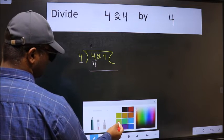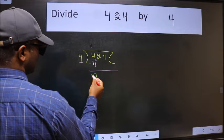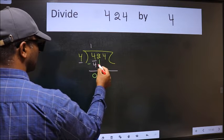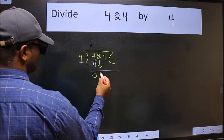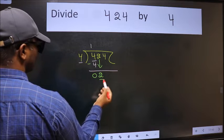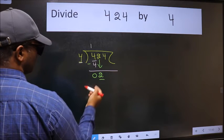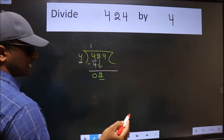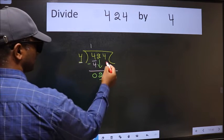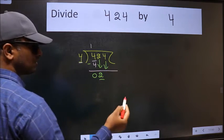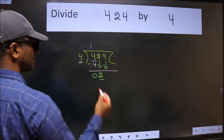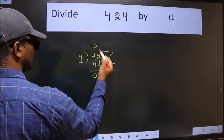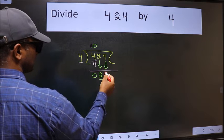Now we subtract and get 0. After this, bring down the beside number, so 2 comes down. Now here we have 2 and here 4. 2 is smaller than 4, so we should bring down the second number. The rule is we should put 0 here, then only we can bring this number down.